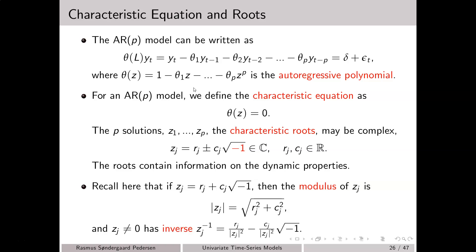The characteristic equation for this model is simply that this polynomial should be equal to 0. This equation has p solutions denoted z1 to zp, which we may also call the characteristic roots. Note that in general these roots may not be real numbers — they may in particular be complex. The root z_j may be given as r_j plus or minus c_j times the square root of minus 1, where r_j and c_j are real numbers and the square root of minus 1 is the imaginary number. These roots contain important information about the properties of the autoregressive model.